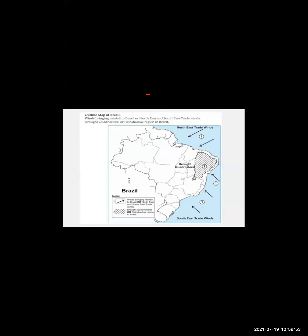The first question for Brazil is about the wind bringing rainfall - the northeast and southeast trade winds. You will show here the northeast trade wind and the second is the southeast trade wind.